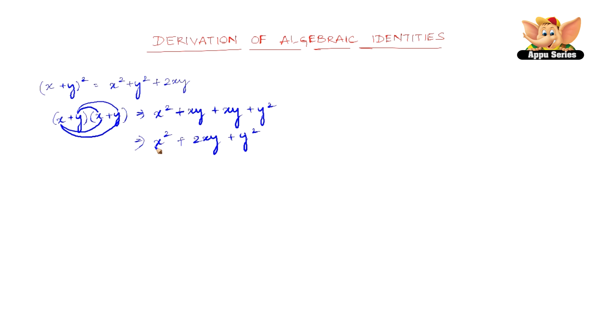So now we have x square plus xy plus xy, which is 2xy, plus y square. We can write this as x square plus 2xy plus y square, or x square plus y square plus 2xy. It all means the same.